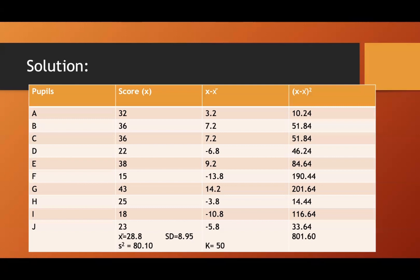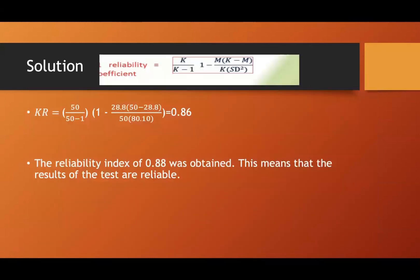So that is the mean, the standard deviation. When you square that one, you have there 80.10 or 80.16. And that is the standard deviation. The variance, since you are going to square. So substitute now in the formula, number of items 50 divided by 50 minus 1, constant. The one there is constant. So multiplied by the mean, 1 minus the mean,